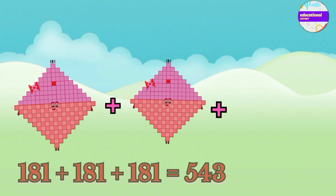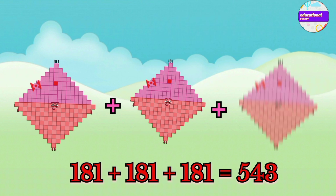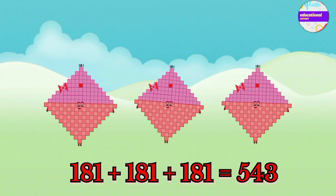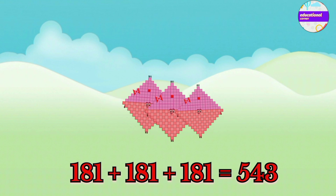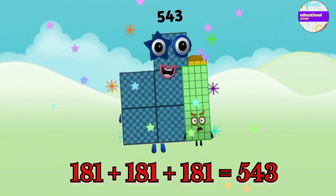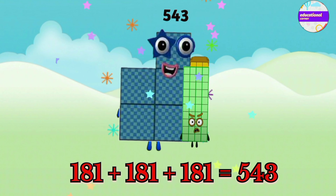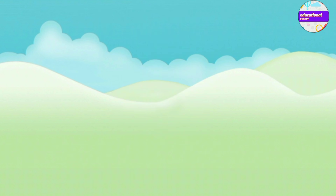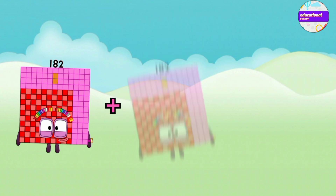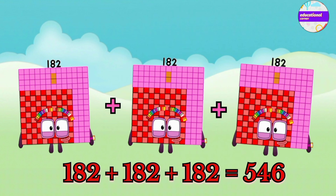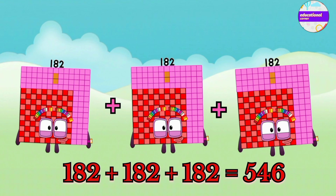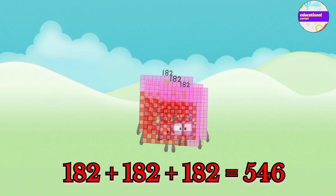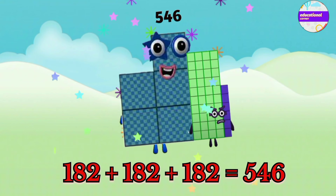181 plus 181 plus 181 equals 543. 182 plus 182 plus 182 equals 546.